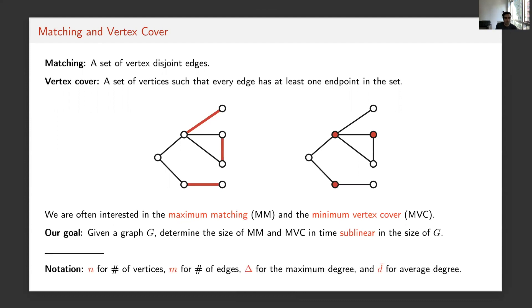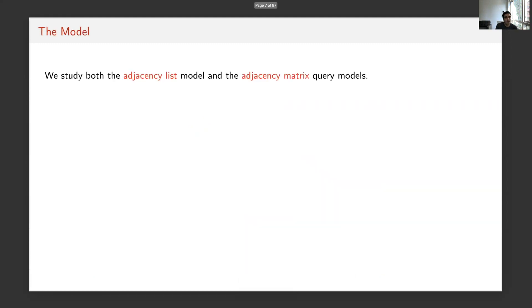Let me fix some notation. I'll use N to denote the number of vertices, M for the number of edges, delta for the maximum degree in the graph, and D-bar for the average degree. When we talk about sublinear time algorithms, it's very important to specify how the input is represented, because we're only going to access a small fraction of it. Two models are common for graph problems: the adjacency list model and the adjacency matrix model. We study both in this work.